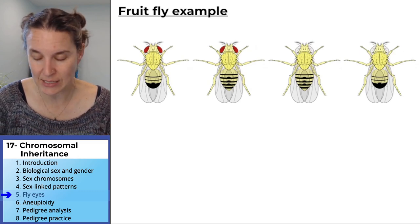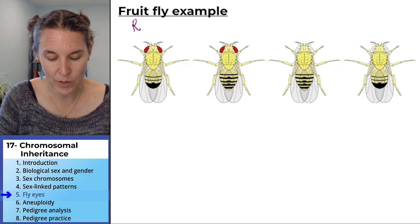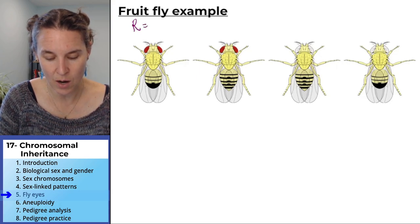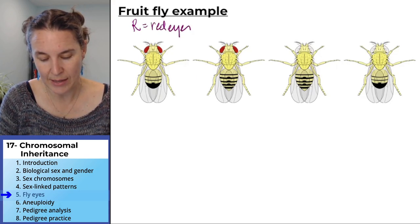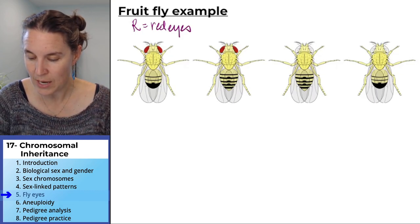Eye color is sex-linked, so we have a dominant trait which I'm going to call R, which is red eyes, and this is the normal state of things.